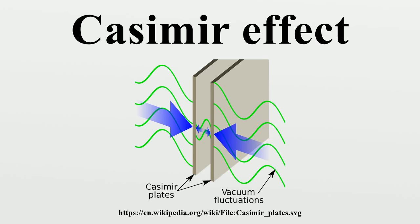Excitations of the field correspond to the elementary particles of particle physics. However, even the vacuum has a vastly complex structure, so all calculations of quantum field theory must be made in relation to this model of the vacuum. The vacuum has, implicitly, all of the properties that a particle may have: spin, or polarization in the case of light, energy, and so on. On average, most of these properties cancel out. The vacuum is, after all, empty in this sense.